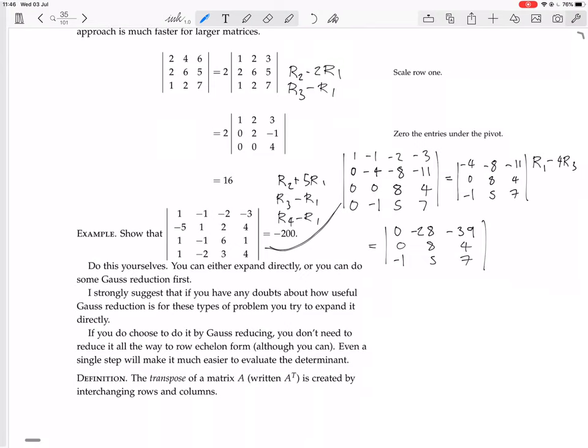Now I can expand down the first column. And again, that minus 1 is an even entry because it's row 3, column 1. So it's just minus 1 times the determinant of what remains, which is, in this case, minus 28, minus 39; 8, 4. But at the same time, let me pull out a 4 from that second row. So that row becomes 2, 1.